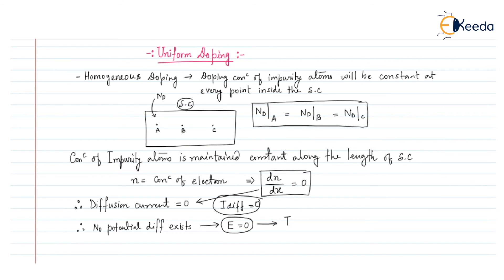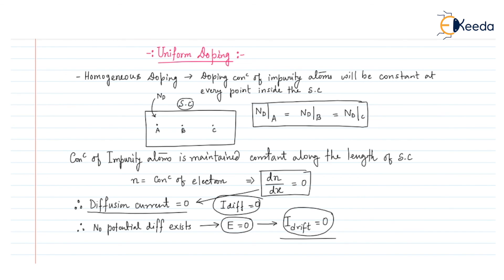Since the electric field is zero, the drift current will also be zero for a uniform doping profile. In this way, for uniform doping in semiconductors, both the diffusion current and the drift current will be zero. This is all about the uniform doping concentration profile inside a semiconductor. Thank you.